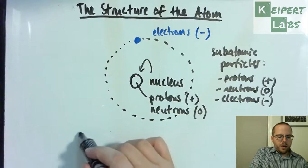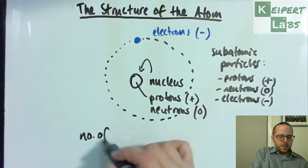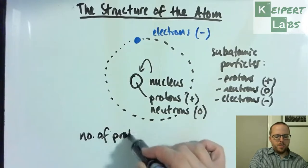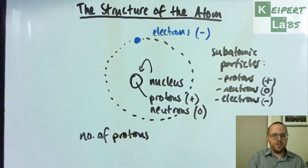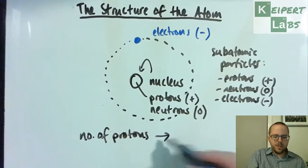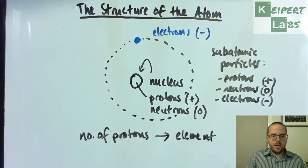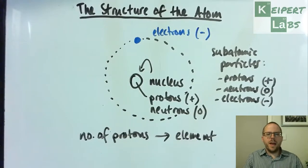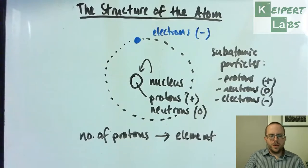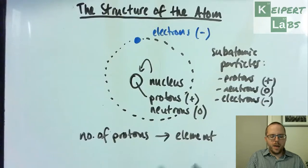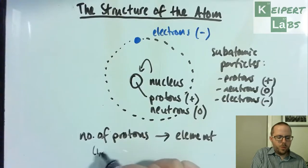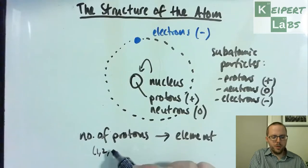One of the key things here is that the deciding factor, or one of the most important aspects of an atom, is the number of protons, because the number of protons dictates which element that atom belongs to. So the idea is that it's a unique number, a whole number—we don't get one and three quarter protons.